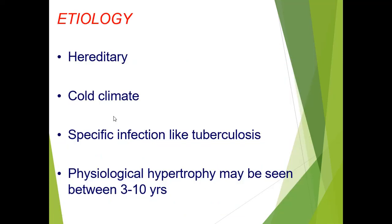The etiology can be hereditary, due to cold climate, or due to specific infections like tuberculosis. Mostly it is physiological hypertrophy, seen between the ages of 3 to 10 years, after which it will start to undergo atrophy.